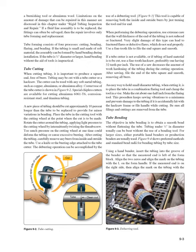Tube cutting: when cutting tubing, it is important to produce a square end, free of burrs. Tubing may be cut with a tube cutter or a hacksaw. The cutter can be used with any soft metal tubing, such as copper, aluminum, or aluminum alloy. Special chipless cutters are available for cutting aluminum 6061-T6, corrosion-resistant steel, and titanium tubing. A new piece of tubing should be cut approximately 10% longer than the tube to be replaced to provide for minor variations in bending. Place the tube in the cutting tool with the cutting wheel at the point where the cut is to be made. Rotate the cutter around the tubing, applying light pressure to the cutting wheel by intermittently twisting the thumbscrew. Too much pressure on the cutting wheel at one time could deform the tubing or cause excessive burring.